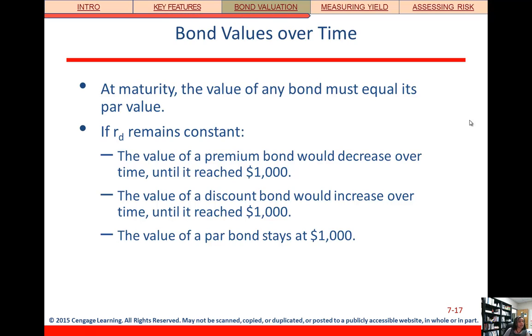To summarize: over time the premium bond decreases in value until it reaches face value, the discount bond increases in value, and the par bond stays the same.